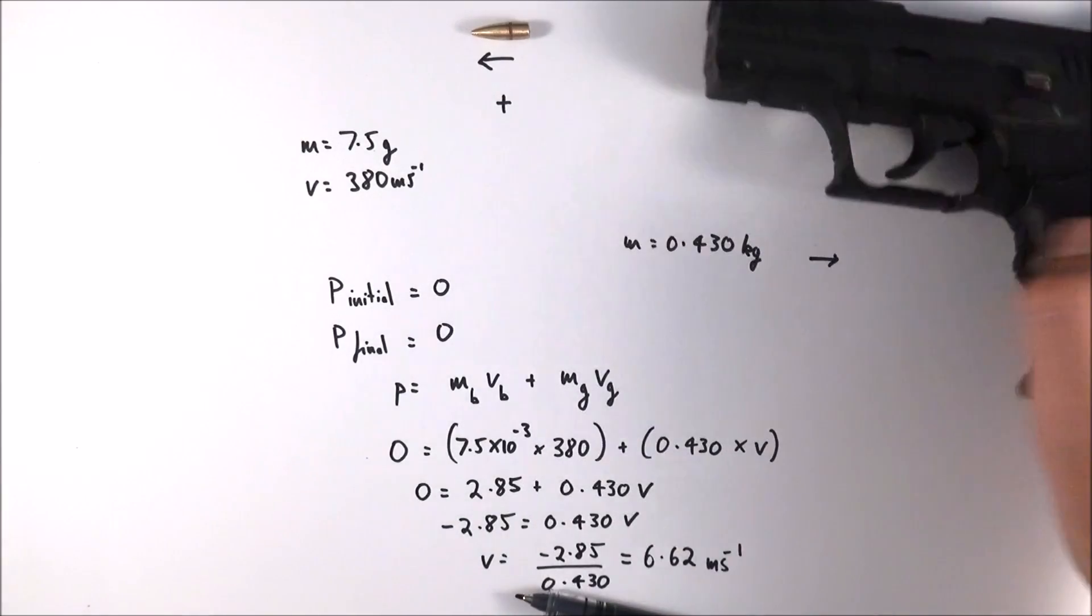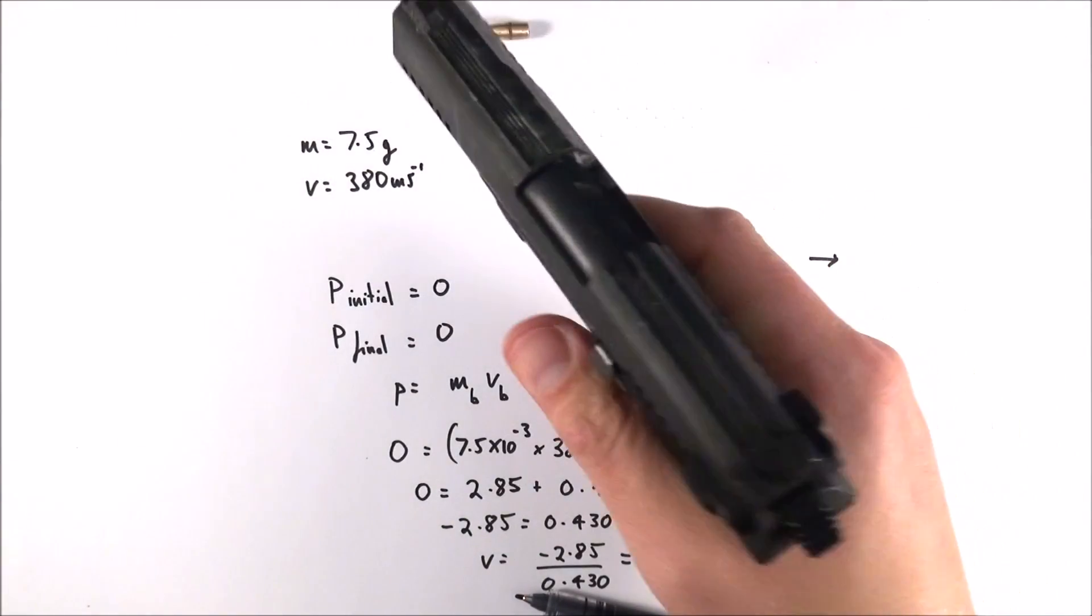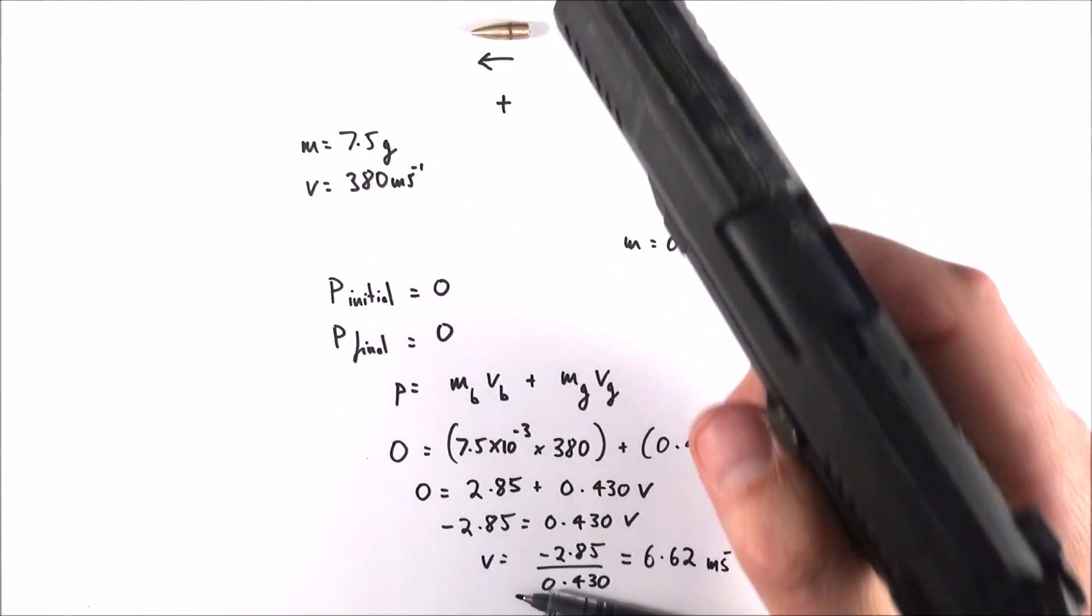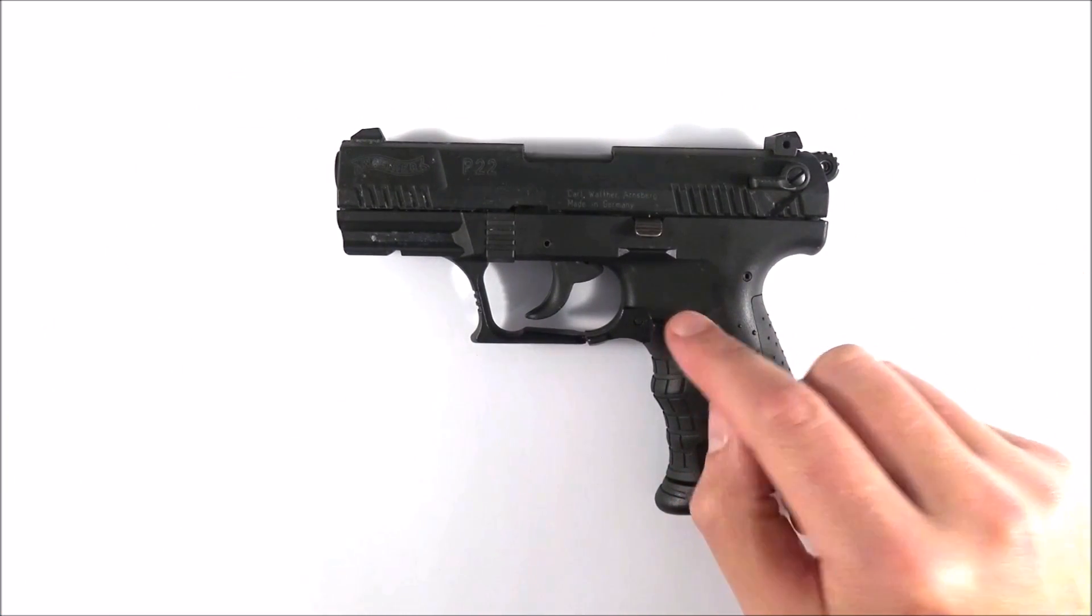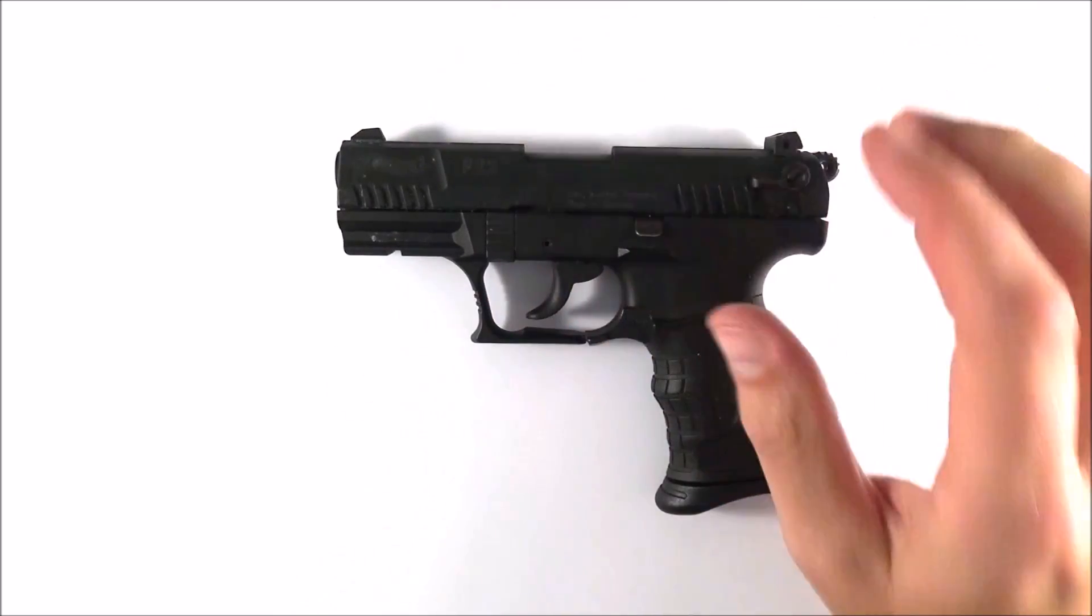Now in that last example we just considered a pistol on its own and it had a recoil velocity of over six meters per second.